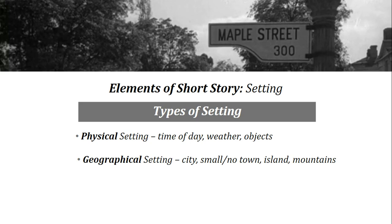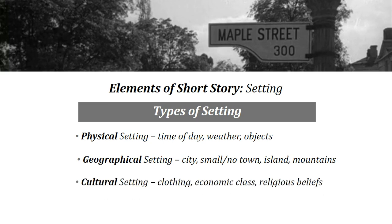A third type of setting, one not commonly considered, is the cultural setting. It's a type of setting that focuses on the people and traditions where the story takes place. The clothing that is worn by those people, the economic class of the characters — like high class, middle class, or low class — and even religious beliefs are part of the cultural setting. And as with those other types of setting, if the cultural setting that a story takes place in changes, so do the events of the story.